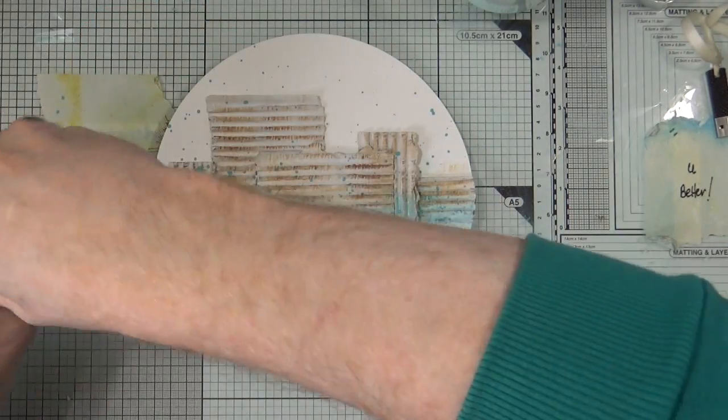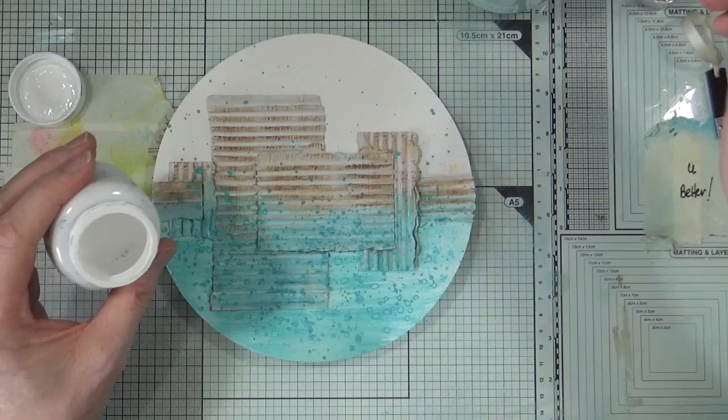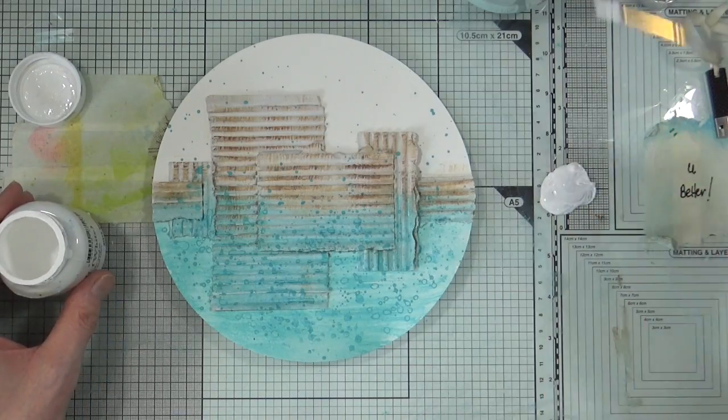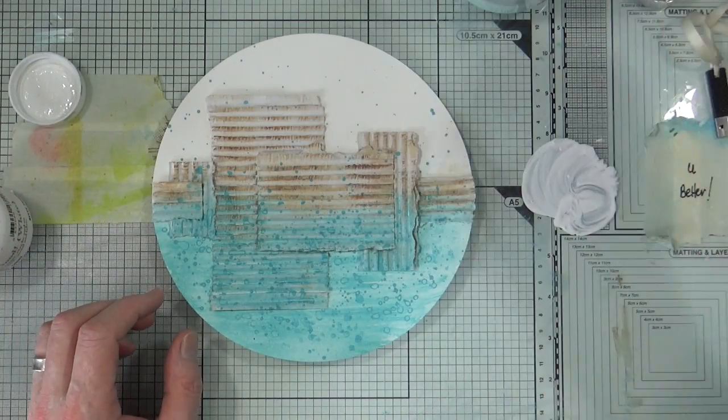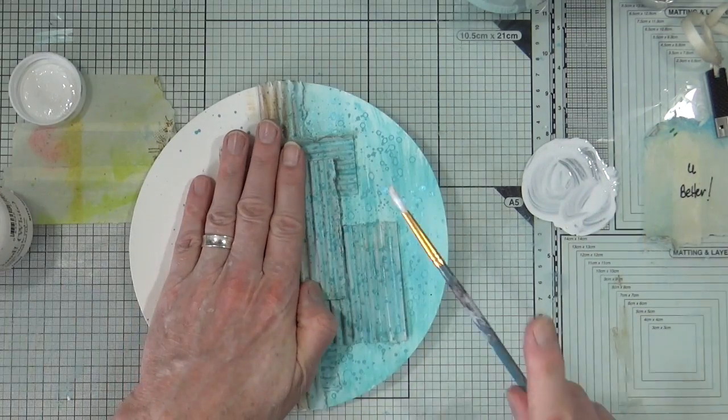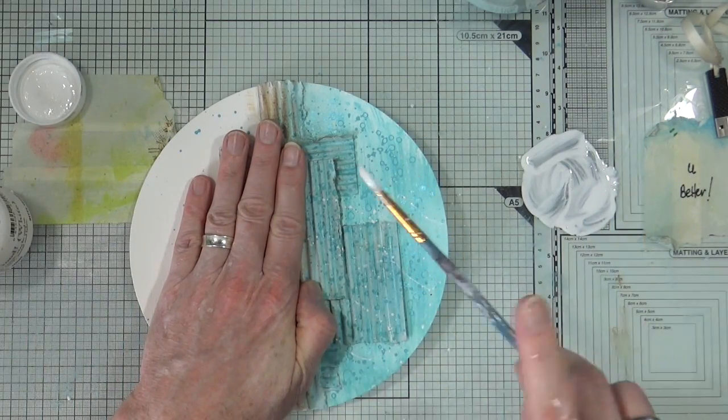Next I'm bringing back the white gesso from Indigo Blu and again I'm going to mix some of the white gesso with some water on my craft mat. I'm going to add some white splatters to the page but only on the bottom half of the page.